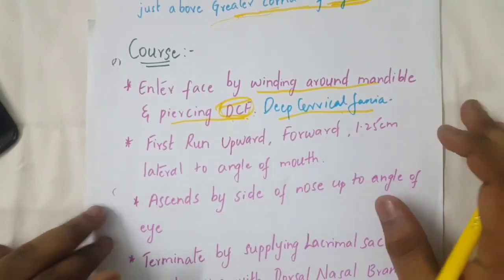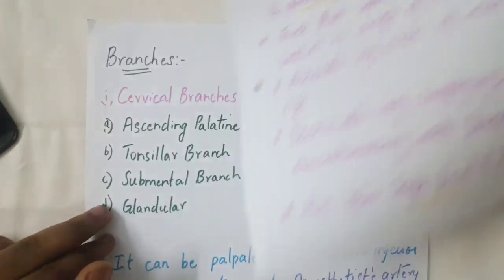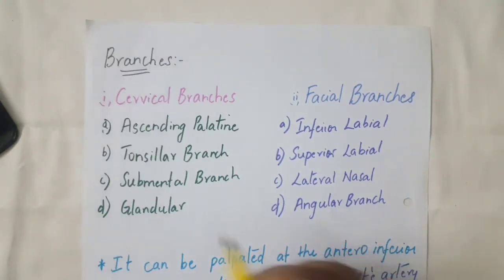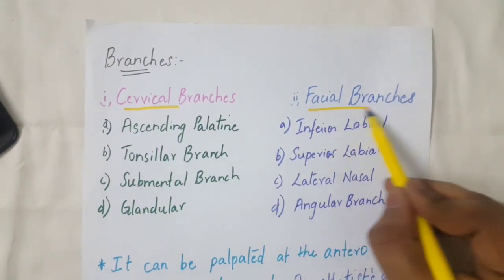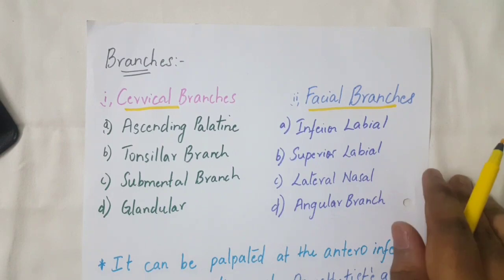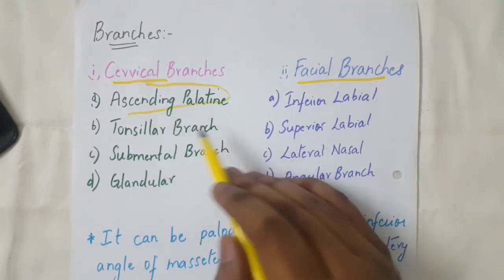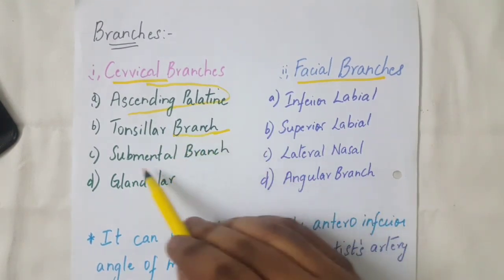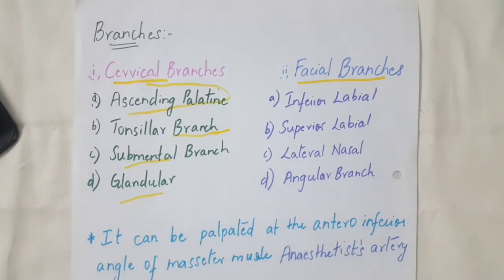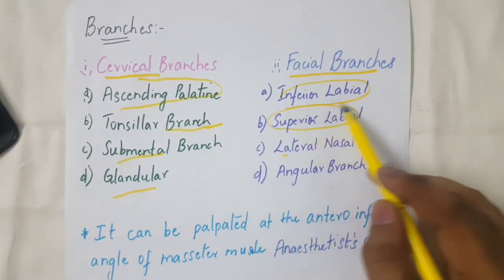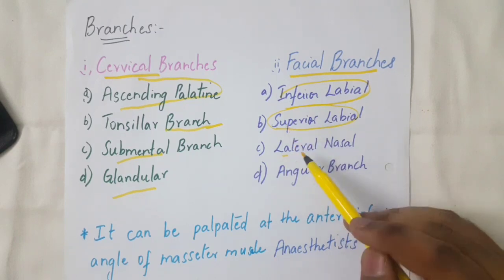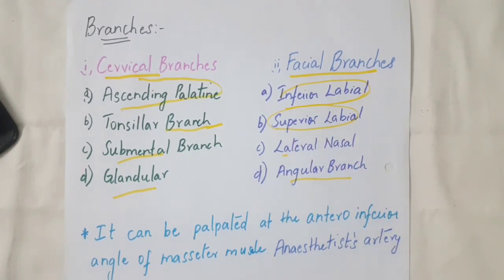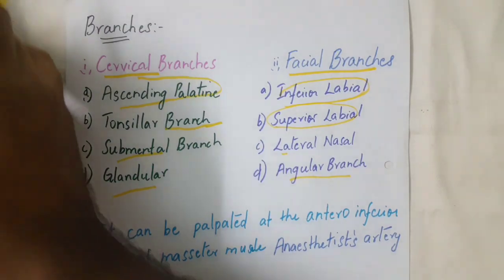Now we will go to the branches of the facial artery. It has two groups: cervical branches and facial branches. The cervical branches are the ascending palatine, tonsillar, submental, and glandular branches. The facial branches are the inferior labial, superior labial, lateral nasal, and angular branches.